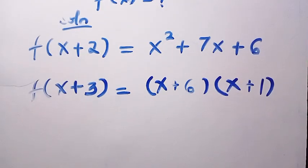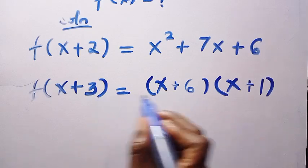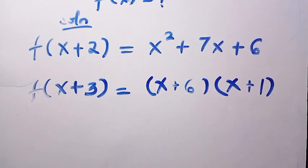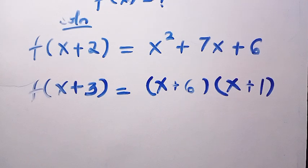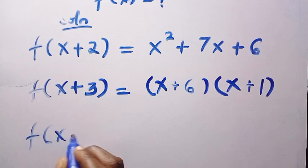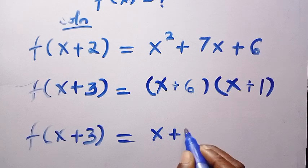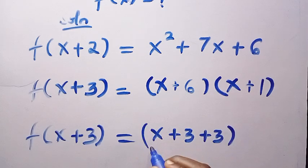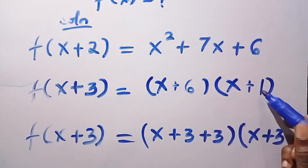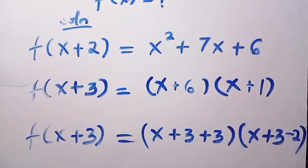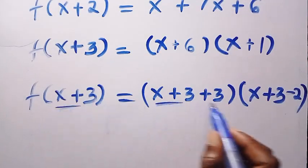Then the next thing is we are going to manipulate this. We have the domain here which is x plus 2. And we want to make sure this also looks like x plus 2. So what we do is rewrite each factor. We have to subtract 2 from the appropriate terms.